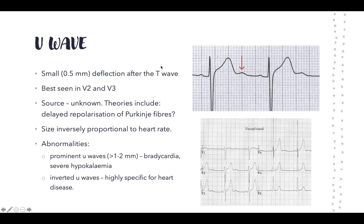That concludes our session on ECG interpretation. It's very important to break down each wave systematically, starting with a lead you're comfortable with — usually lead two, as it best captures the electrical flow. Analyze each segment including P waves, QRS, ST, and T waves, and check all leads since abnormalities may only appear in particular leads. Future sessions will cover specific pathologies and ECG reading practice. Please comment below on topics you'd like covered next.